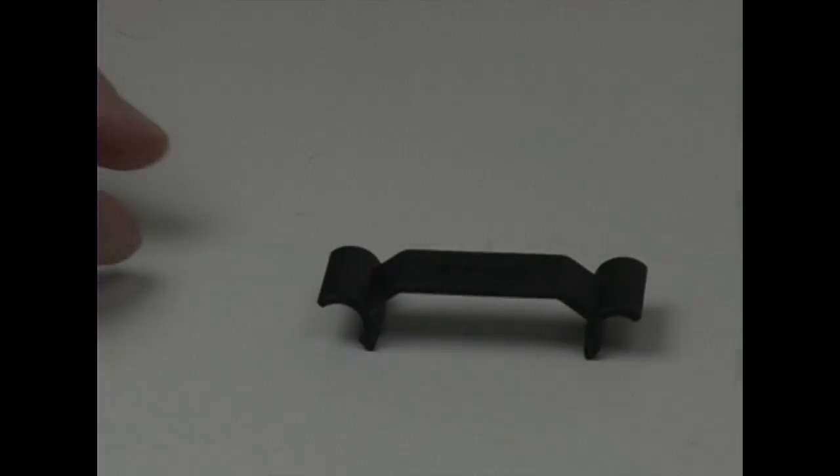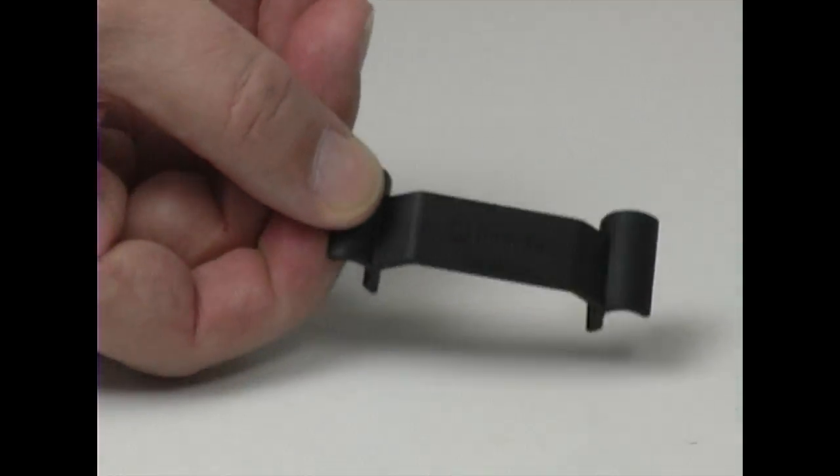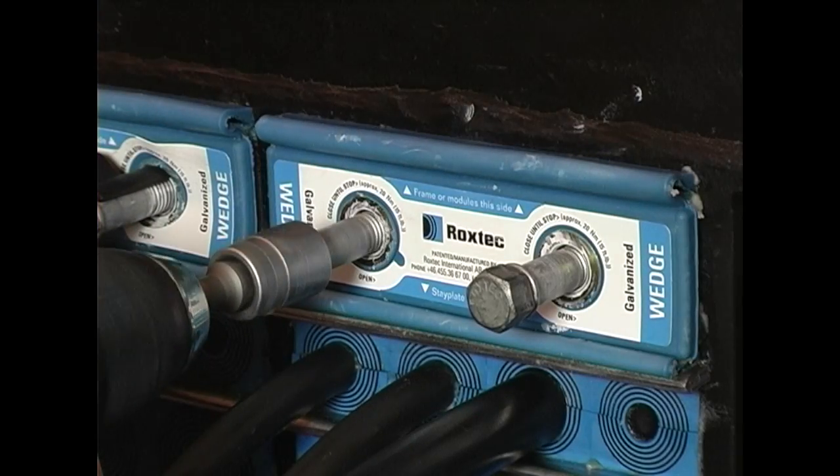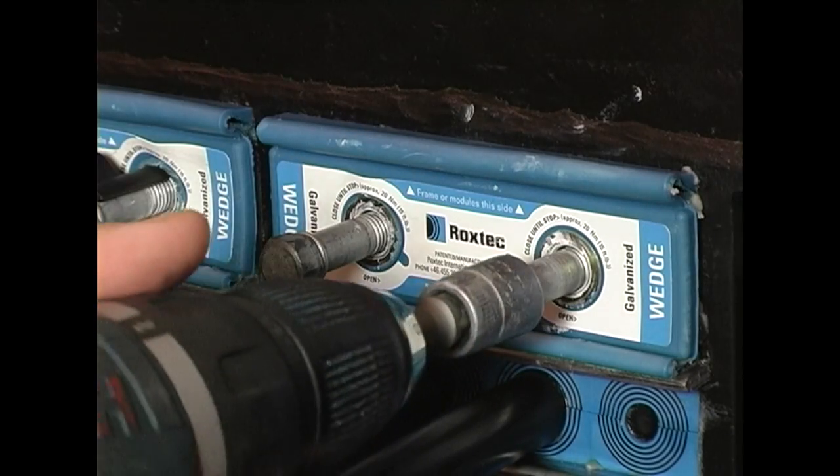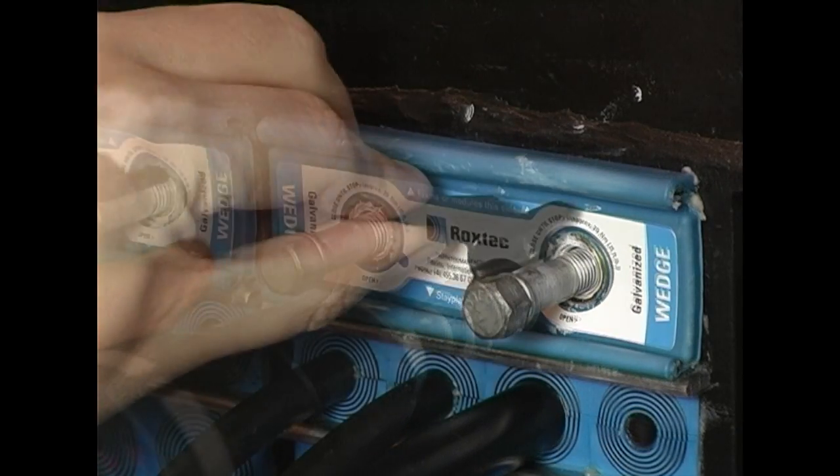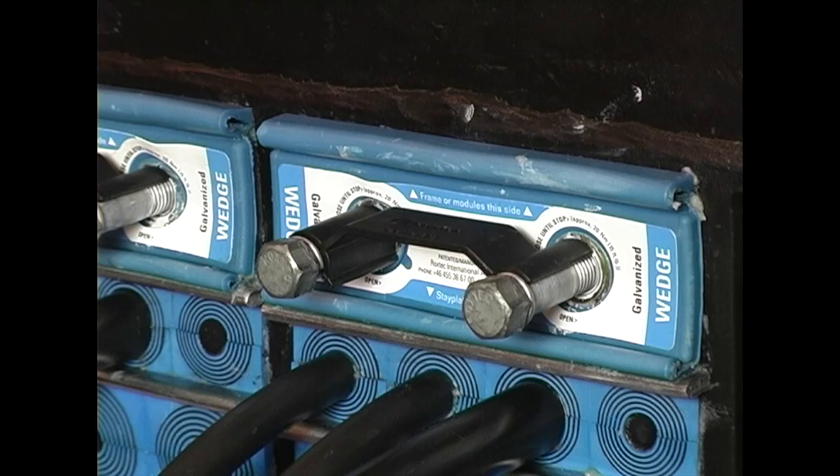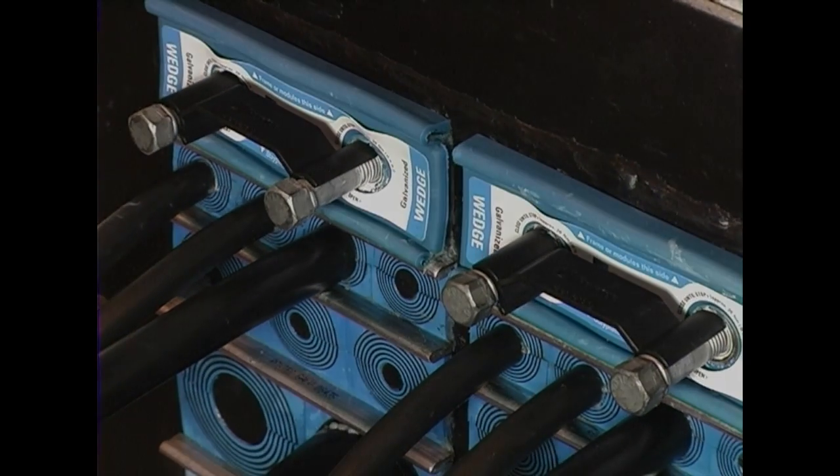The Roxtec wedge clip is included in the wedge kit. Install the wedge according to the assembly instructions. The clip can only be attached when the screws of the wedge are tightened to full stop. The purpose of the clip is to verify that the wedge is properly installed and tightened.